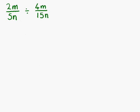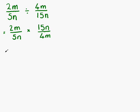Example four. We have 2m over 5n divided by 4m over 15n. So again, we need to change our sign to multiplication and flip the second fraction upside down. So 2m over 5n multiplied by 15n over 4m. Multiplying the numerators: 2m times 15n — 2 times 15 gives us 30, and m times n gives us mn. Looking at the denominators: 5n times 4m — 5 times 4 gives us 20, and n times m is again mn.